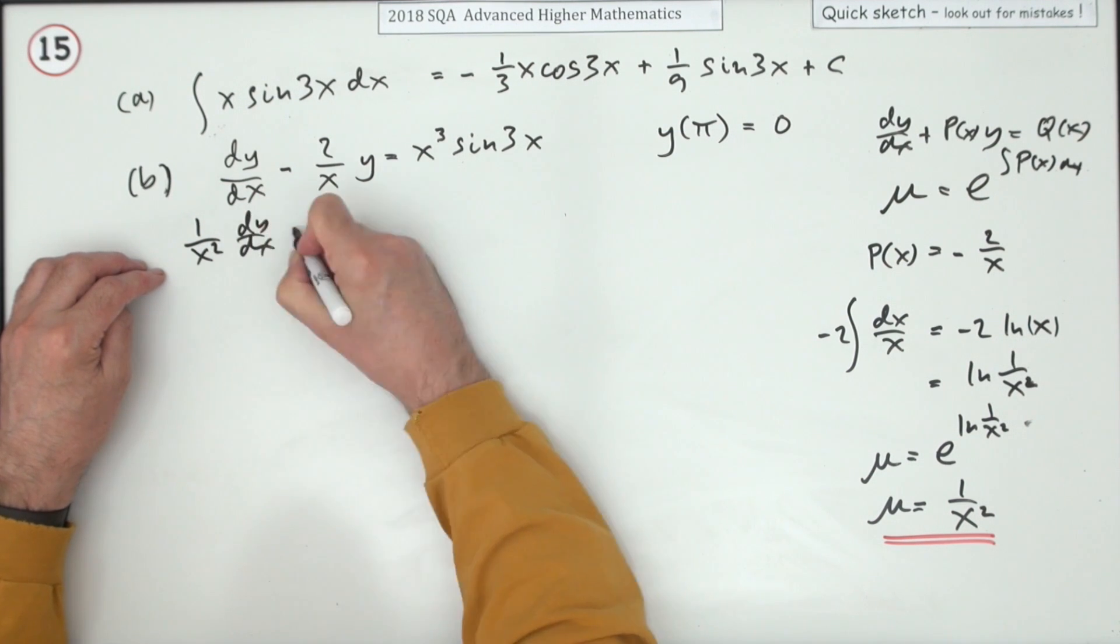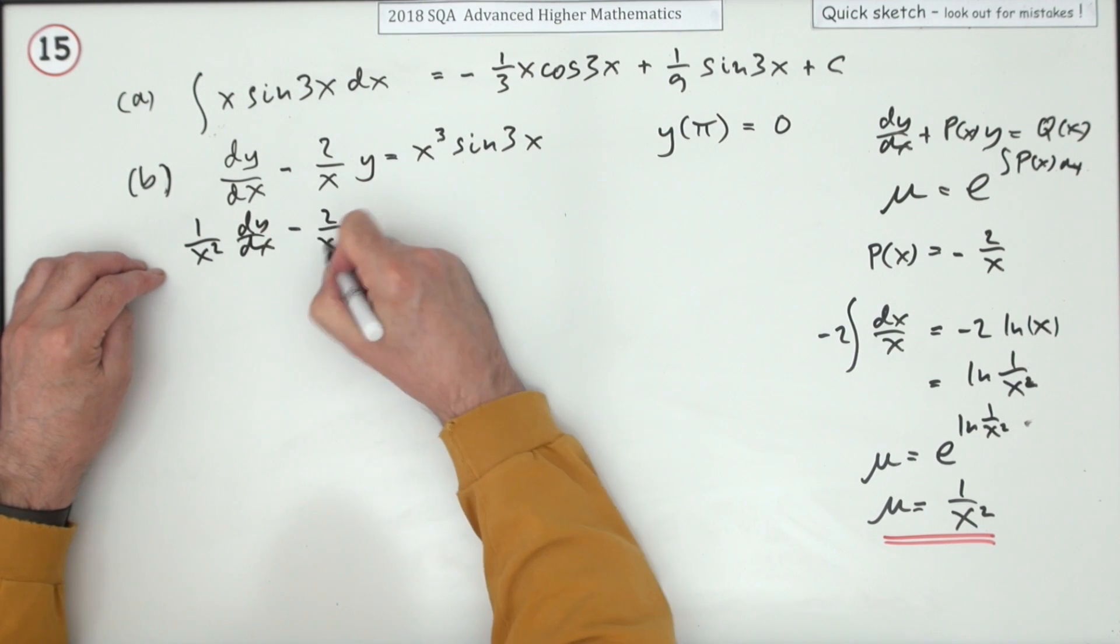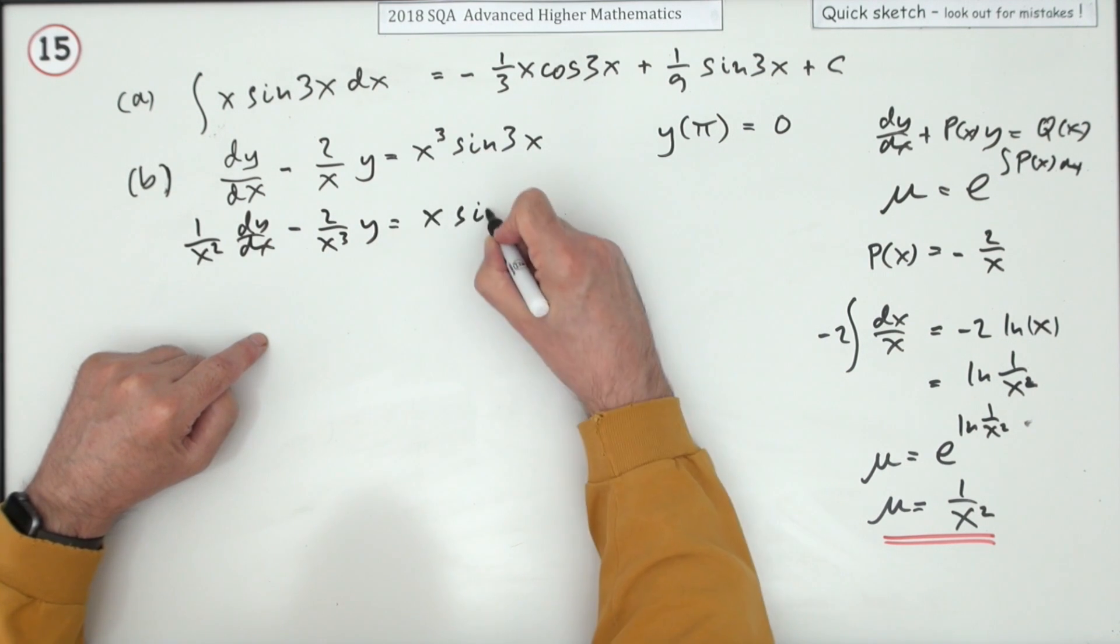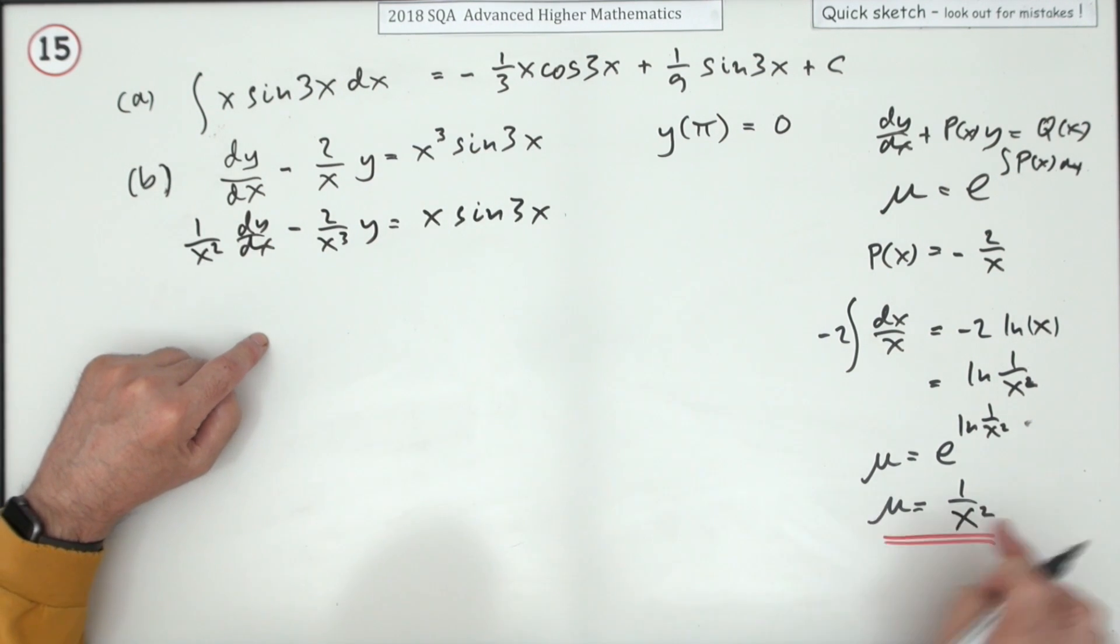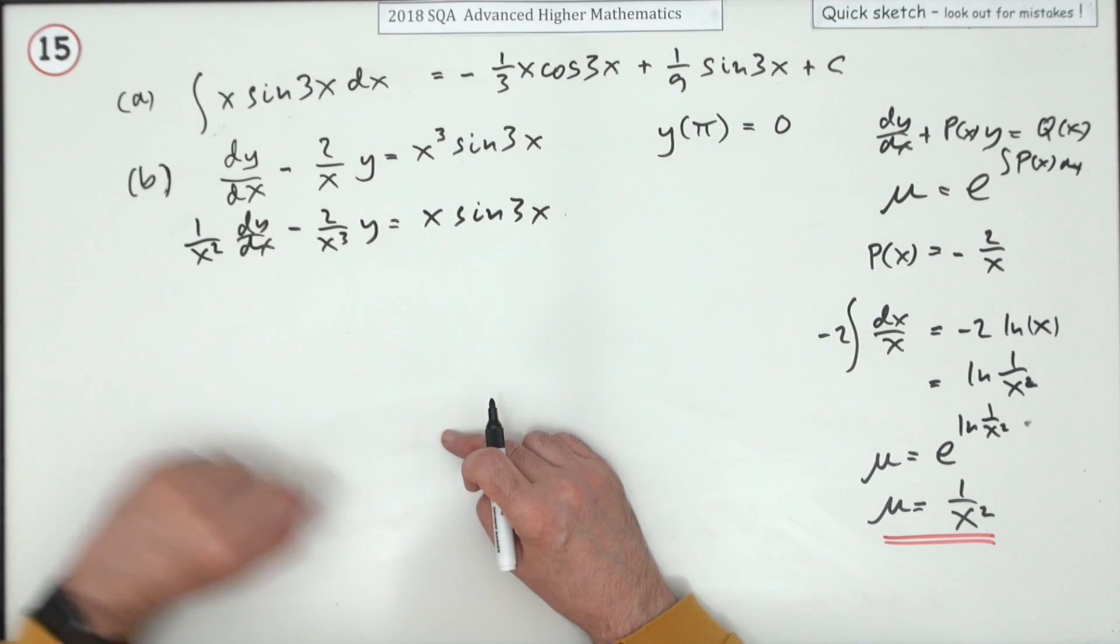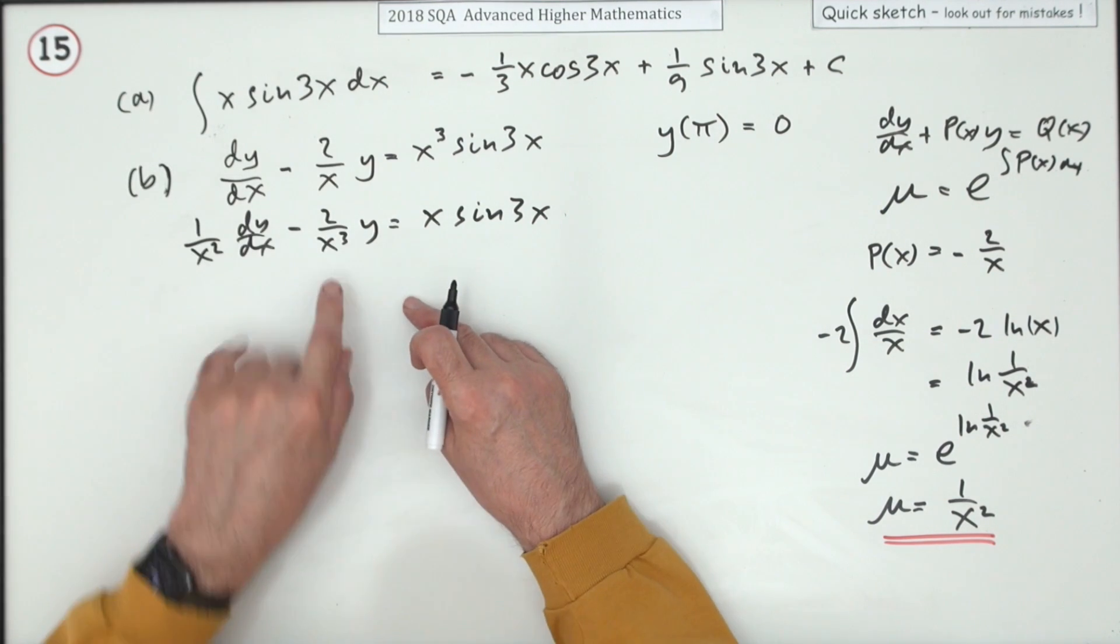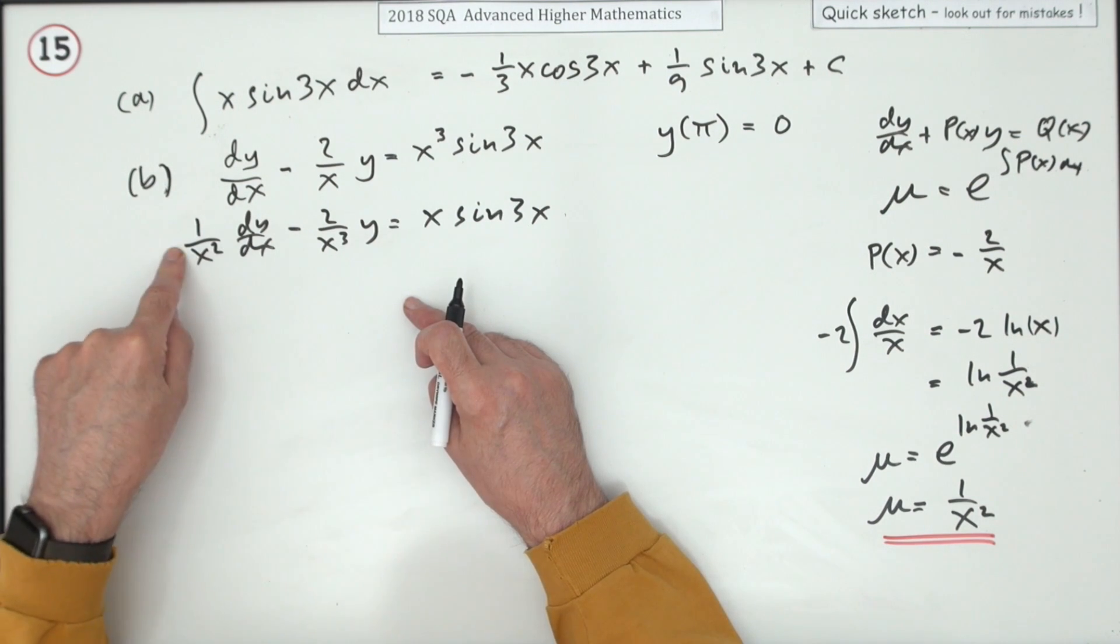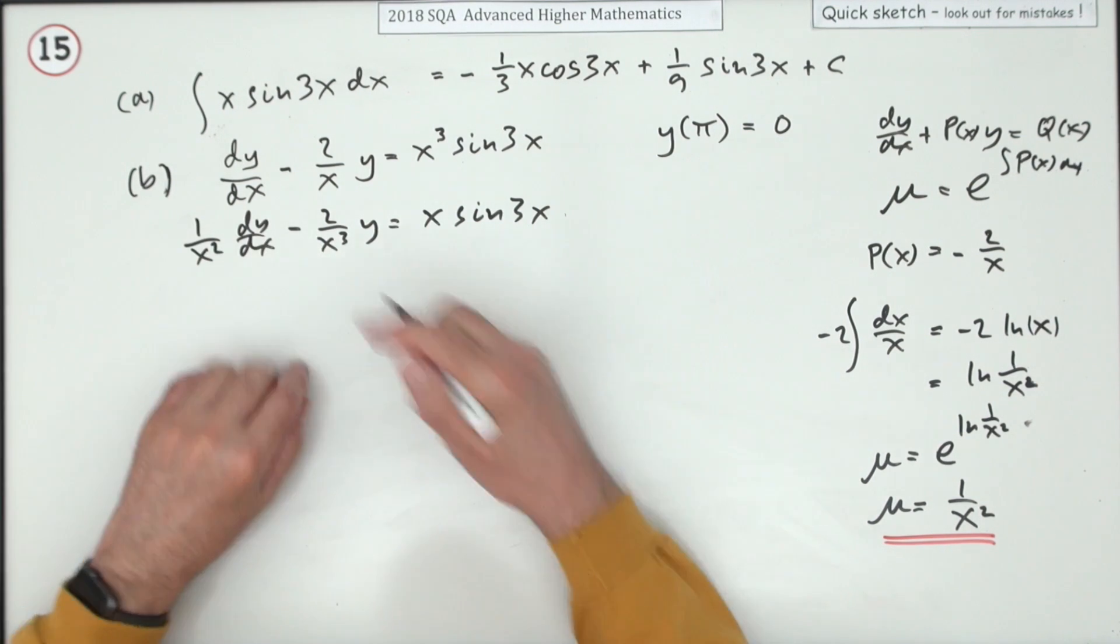It's 1 over x squared dy/dx, multiplying that, minus 2 over x cubed y. That'll pop that down to x when you multiply everything by 1 over x squared. And there you are back at the beginning, because the next step is that's what you would get if you differentiated 1 upon x squared times y.